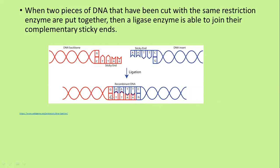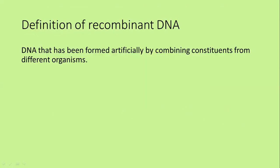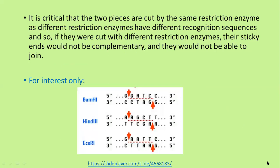This was the original DNA in red, and this is the donor gene in blue. The DNA as a total is now called recombinant DNA — DNA that has been formed artificially combining constituents from different organisms. It is critical that the two pieces are cut by the same restriction enzyme, as different restriction enzymes have different recognition sequences. If the two pieces were cut with different restriction enzymes, their sticky ends would not be complementary and they wouldn't be able to join.